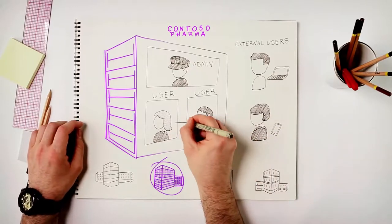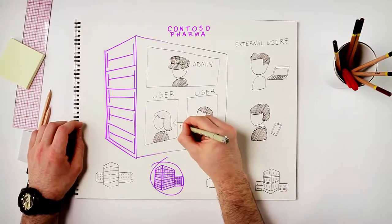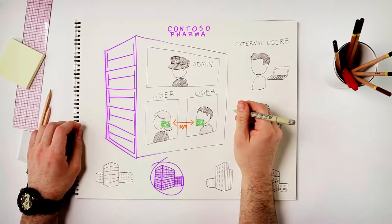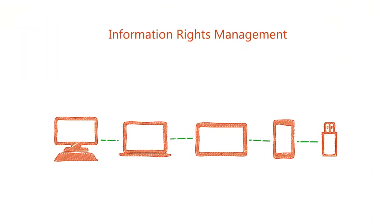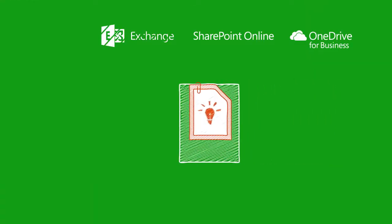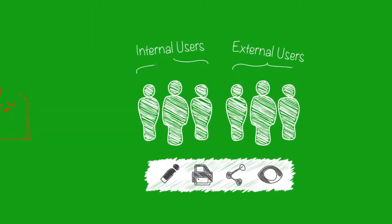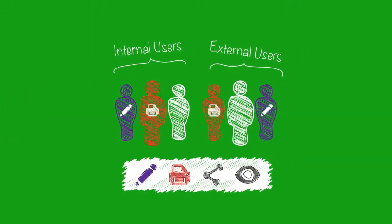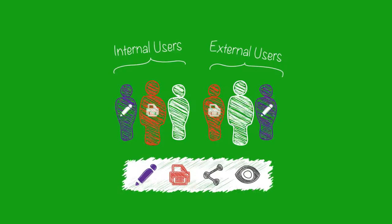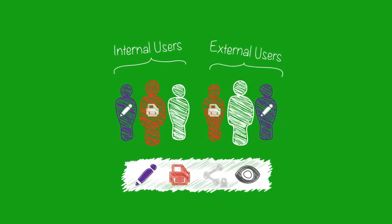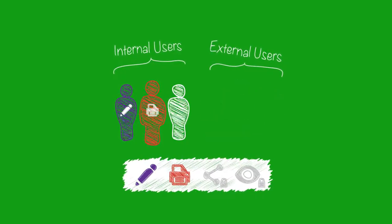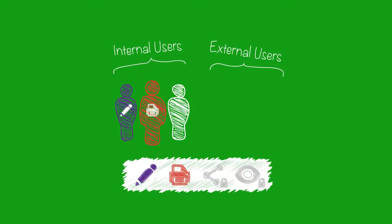First is Information Rights Management, also known as IRM, that can be used to secure communication inside your company. IRM helps you secure your information by encrypting it and applying an intelligent policy so that only specified people can act on it. For example, you can allow recipients to edit and print, but restrict them from forwarding to others, or mark the document as company confidential so external users can't view it.